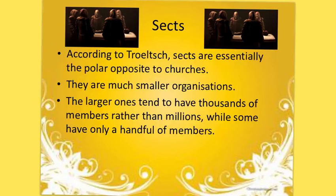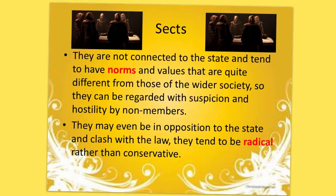The next typology is the sect. According to Trolski, sects are essentially the polar opposite to churches. They are smaller organisations; the larger ones tend to have thousands of members rather than millions, while some have only a handful. They are really small in comparison to denominations or churches. One of the main things that differs a sect from a church is that they are not connected to the state and tend to have norms and values quite different from wider society, so they can be regarded with suspicion and hostility by non-members, often categorised as deviant and subversive compared to mainstream ideology. They may even be in opposition to the state and clash with the law, tending to be radical rather than conservative.